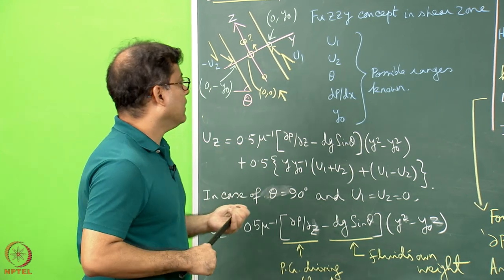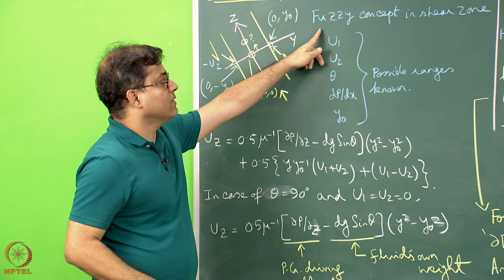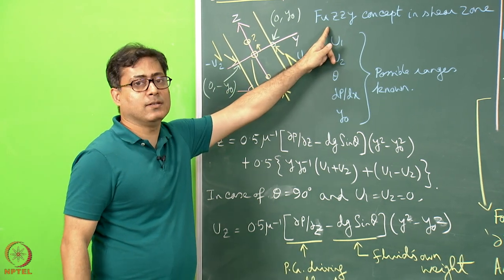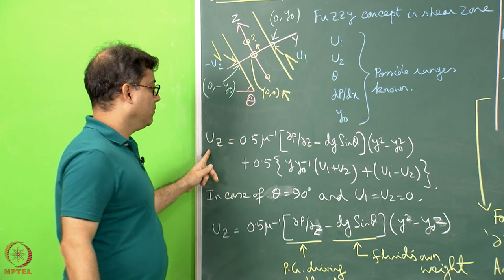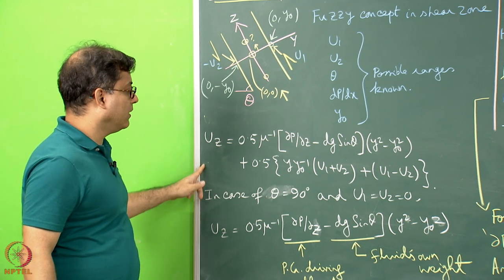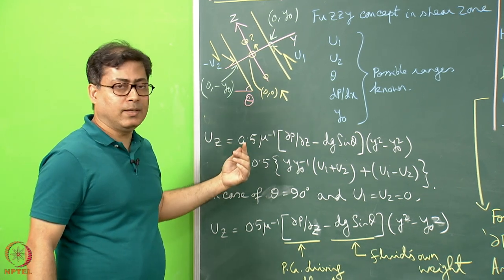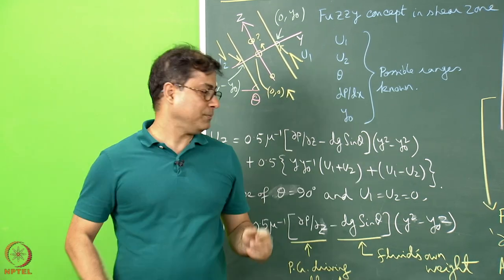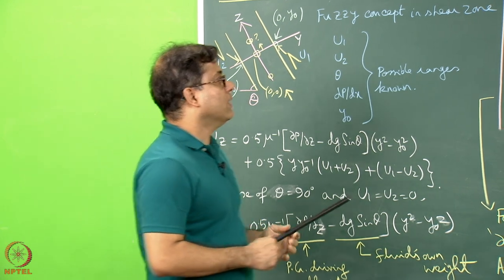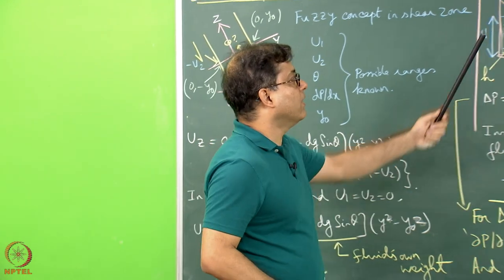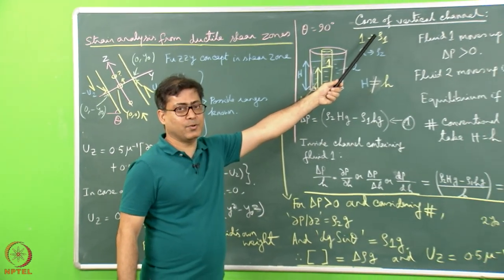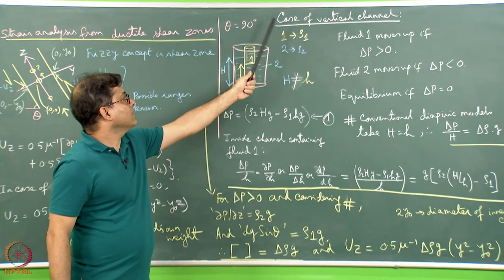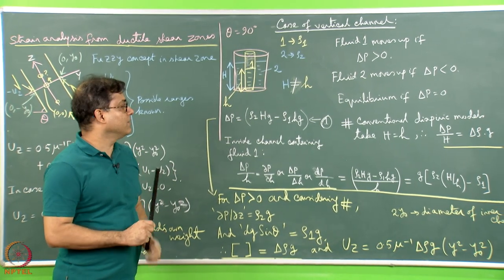In that case, the fuzzy concept in shear zone will be applied and the velocity profile will be given some changes. Now I come to the case of the vertical channel, which I was promising earlier. In this case, theta is equal to 90 degrees.